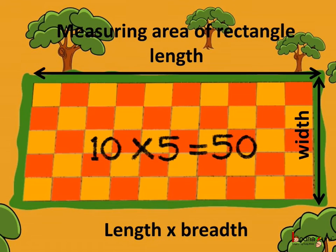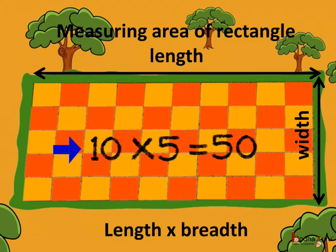The area of a rectangle is length multiplied by the breadth of the rectangle. For example, if the length is 10 meters and the breadth is 5 meters, then the area would be 10 multiplied by 5, which is equal to 50 square meters.